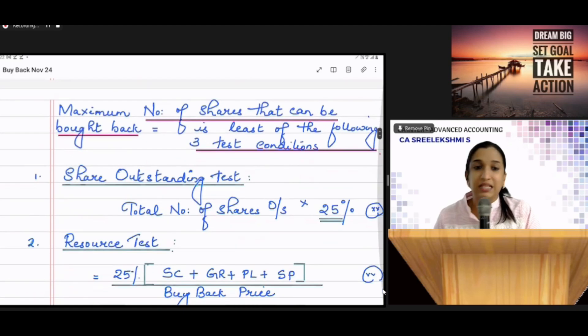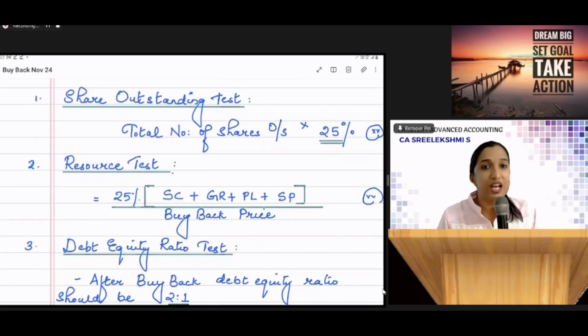Resource test. Take the total of share capital, general reserve, P&L, free reserves and Securities Premium. Apply 25% to it divided by buyback price.